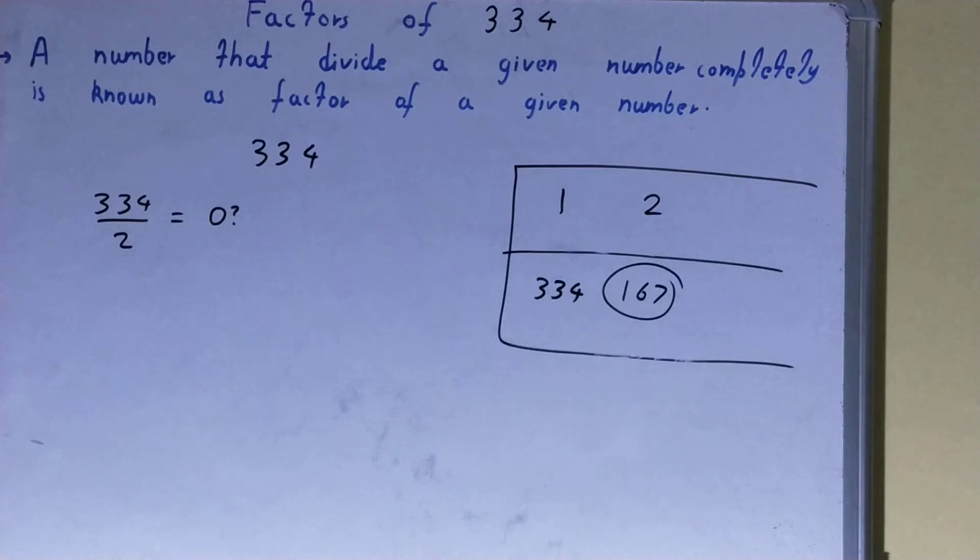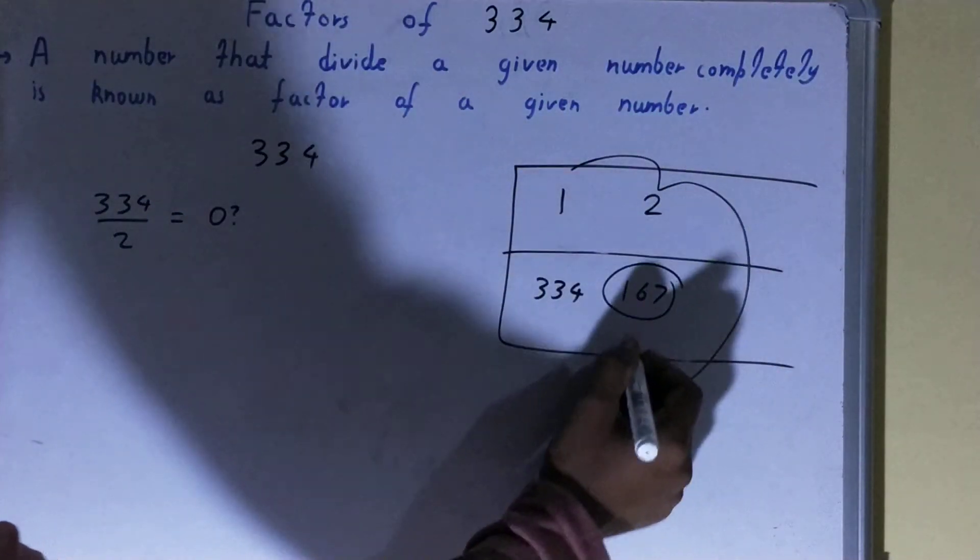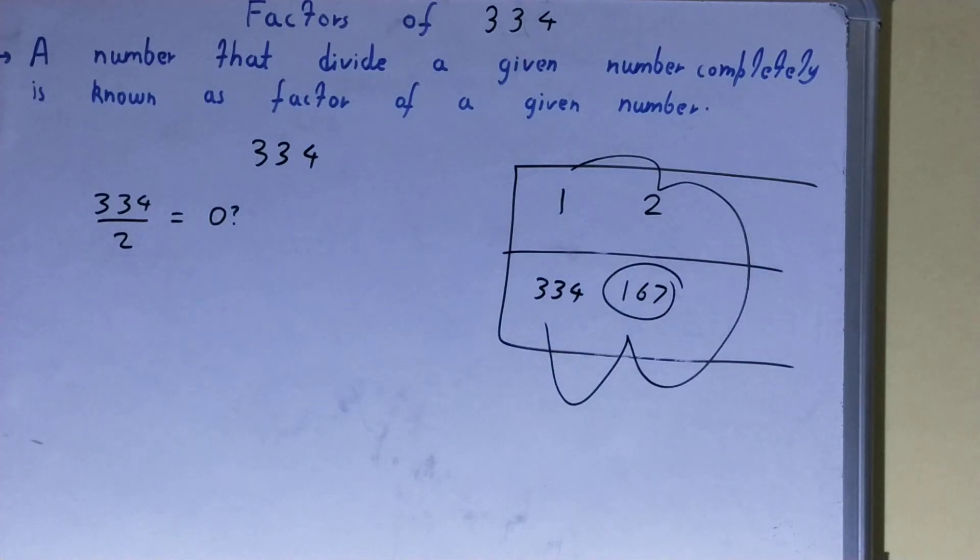And the set of factors for the number 334 will be 1, 2, 167, and 334. So this was all about factors of the number 334. If you found the video helpful, please do like the button, consider subscribing, and thanks for watching.